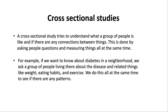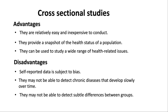A cross-sectional study tries to understand what a group of people is like and if there are any connections between things. This is done by asking people questions and measuring things all at the same time. For example, if we want to know about diabetes in a neighborhood, we ask a group of people living there about the disease and related things like weight, eating habits, and exercise — all at the same time to see if there are any patterns.